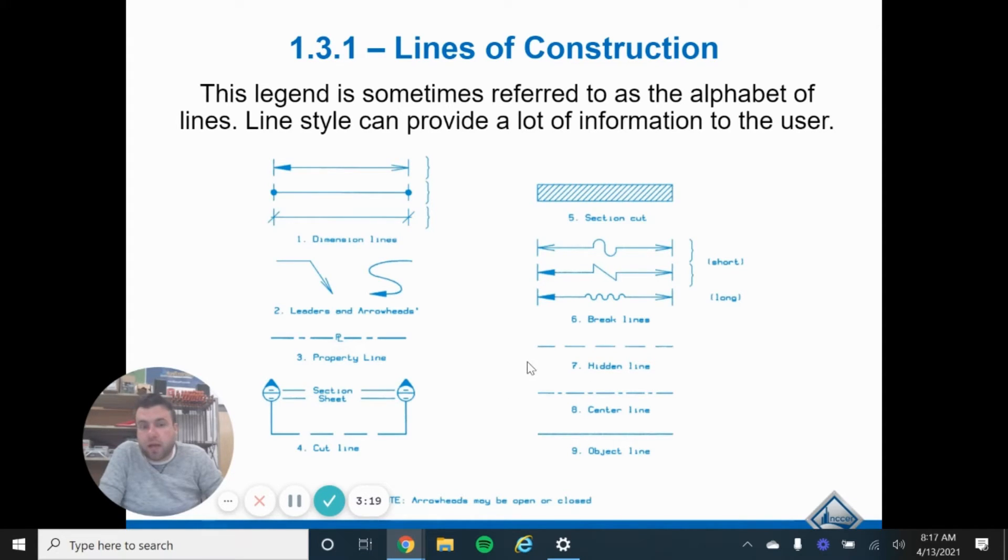Hidden lines are usually dotted, center lines, object lines, different things, pretty explanatory. And on all blueprints, they're going to have something that's going to tell you what these mean, a legend of some kind that are explaining what these mean.